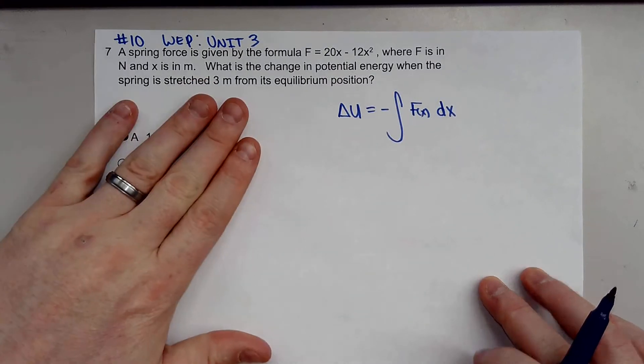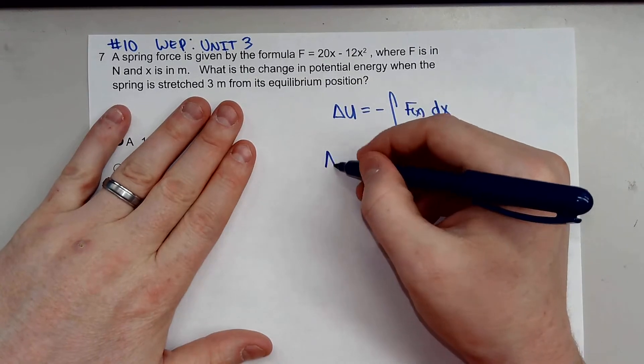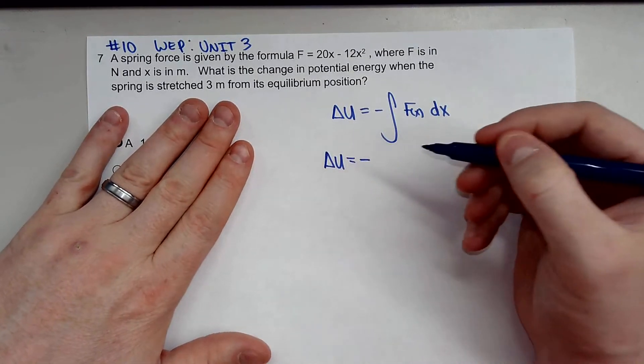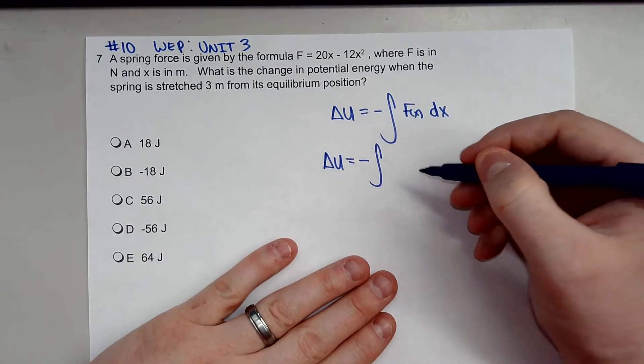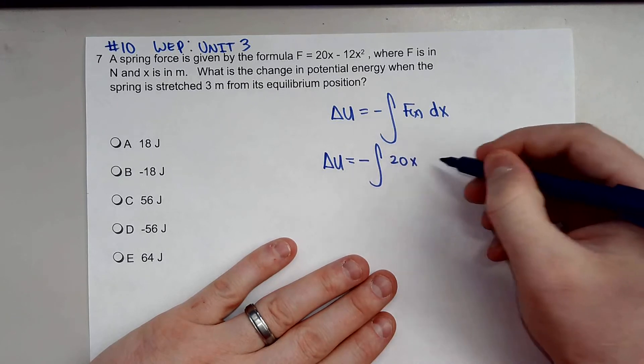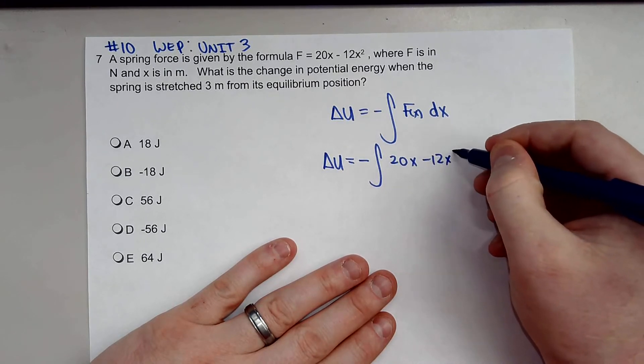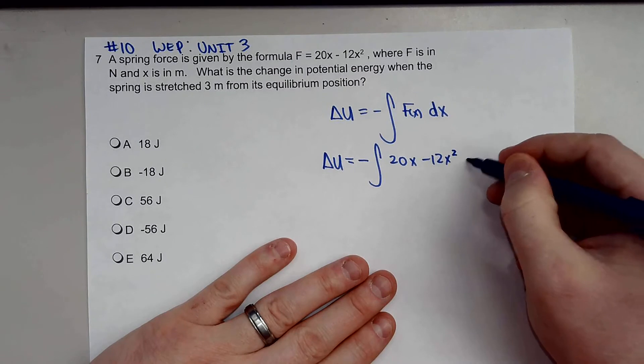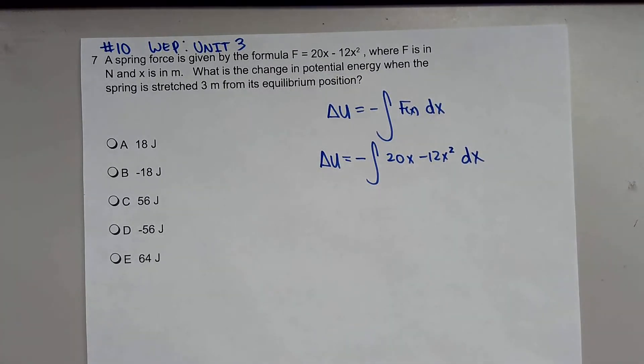Let's go ahead and do that here. The negative integral of 20X minus 12X squared DX. Let's integrate this.